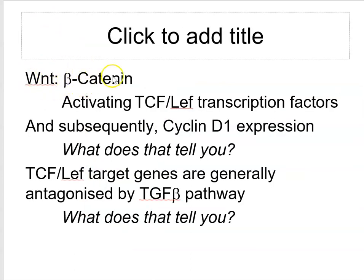In the Wnt pathway, beta-catenin activates TCF/LEF transcription factors which switch on Cyclin D1 — the initiation of G1 and the first cyclin switched on in response to growth factor signaling. These target genes are generally antagonized by the TGF-beta pathway, which is the anti-proliferative growth factor. This is the end of part one; in part two I will go through the Notch signaling pathway and experimental models for studying stem cells in the lab, typically cell culture based experiments.